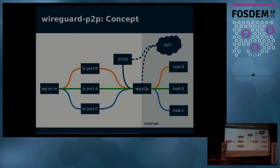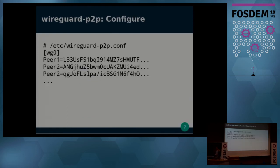When you have multiple hosts, it will allocate several ports on your local address. To set it up, you create a configuration file where you specify the device name, and for each peer that WireGuard peer-to-peer should handle, you put in the public key. Then you basically just start the daemon.